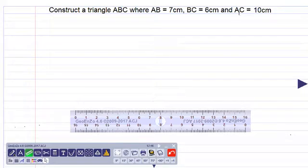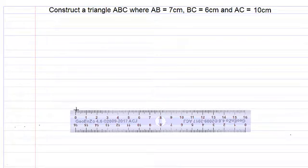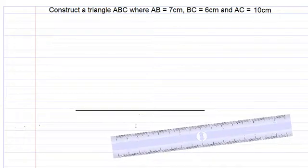Let's draw the line AC equals 10 centimeters. We first draw a line that goes beyond 10 centimeters and we label one point A.